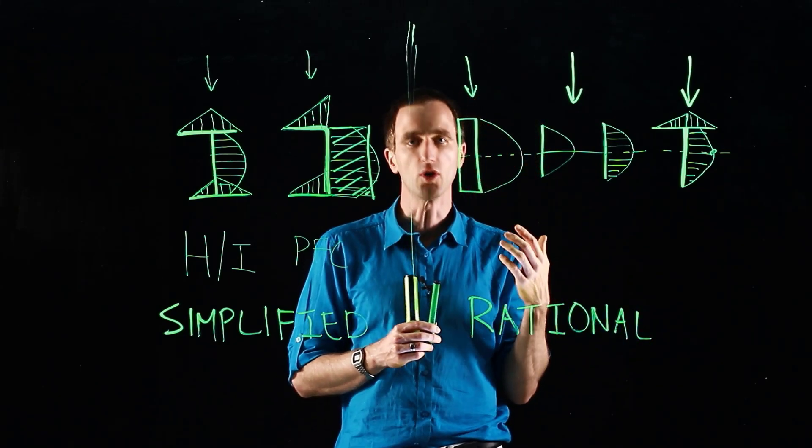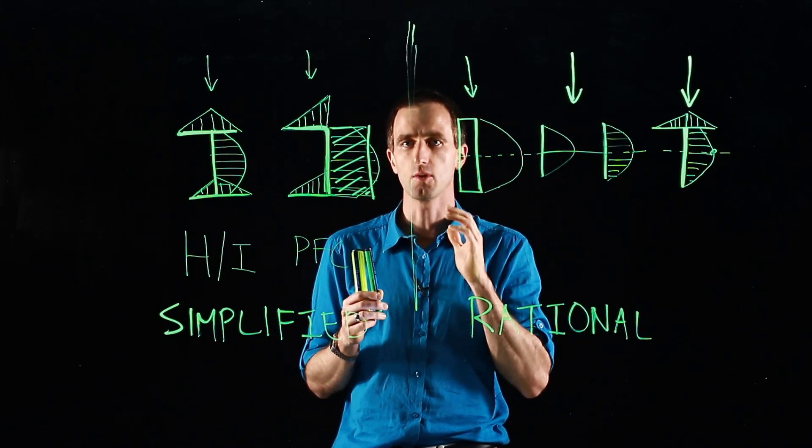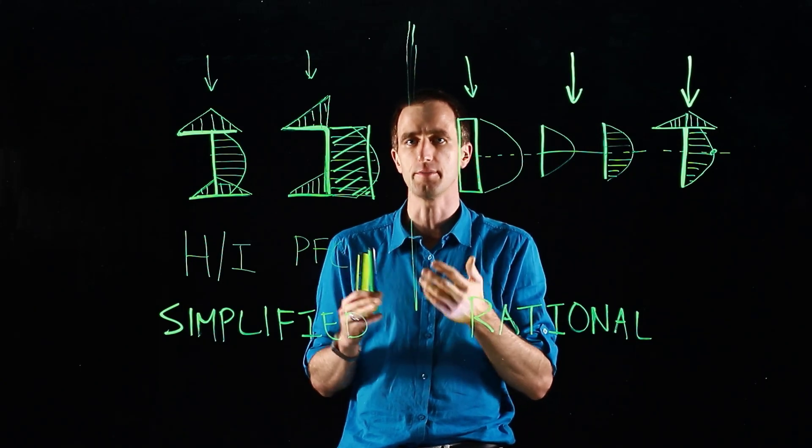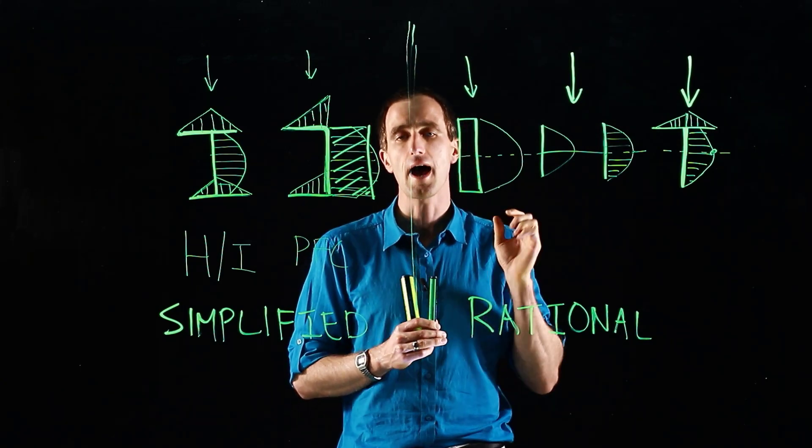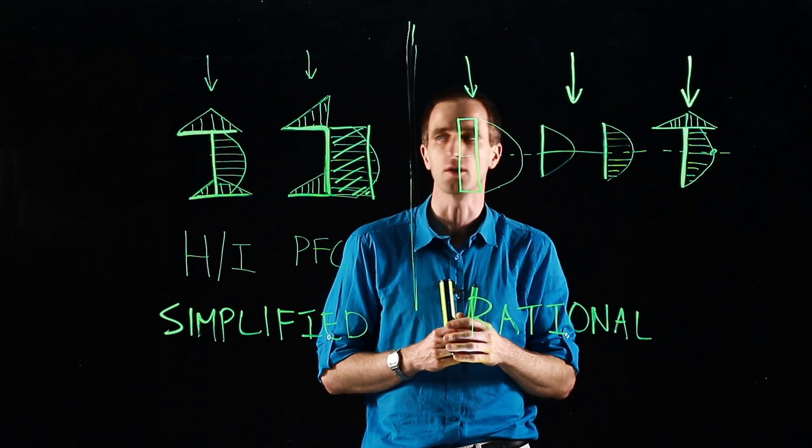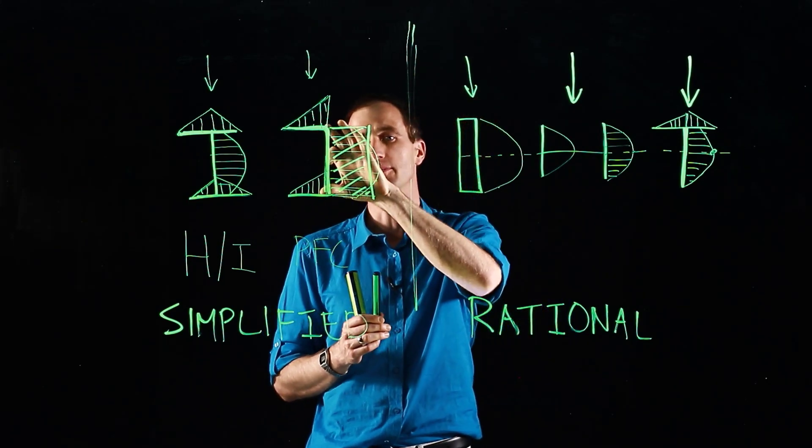Shear in steel doesn't normally govern. In your average rolled sections, your I-beams and H-beams, shear is not normally critical. However, it does start becoming critical when these webs start becoming more slender.